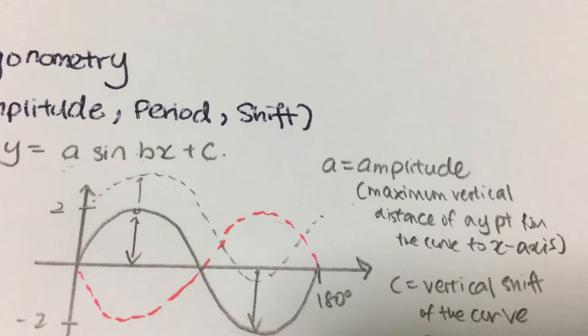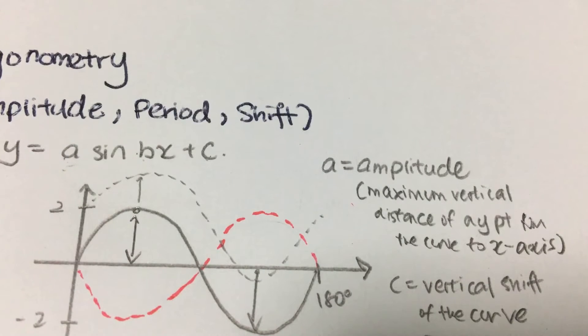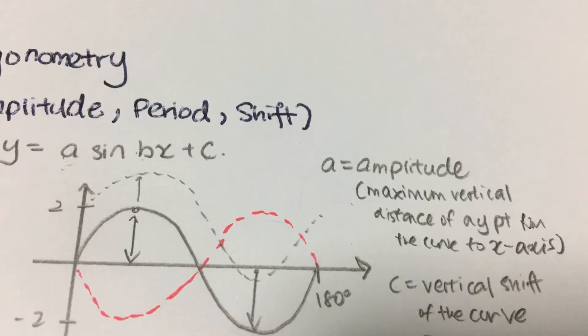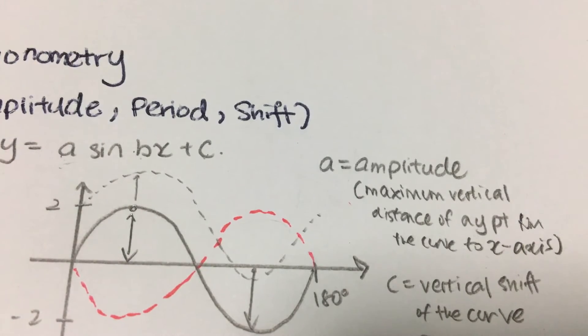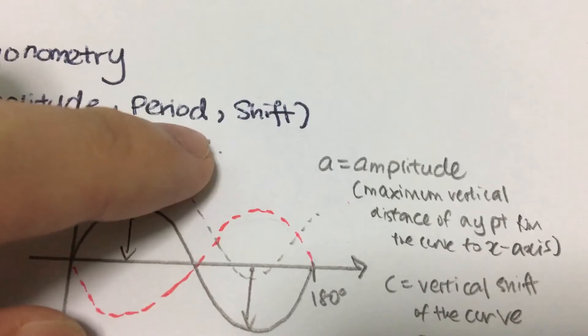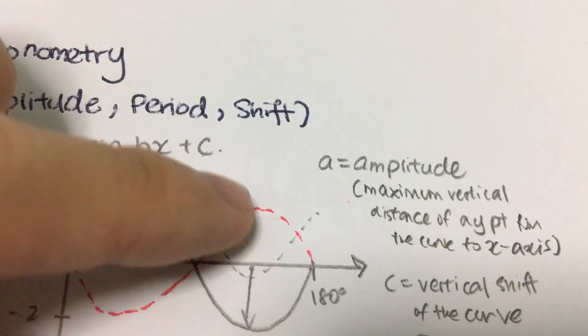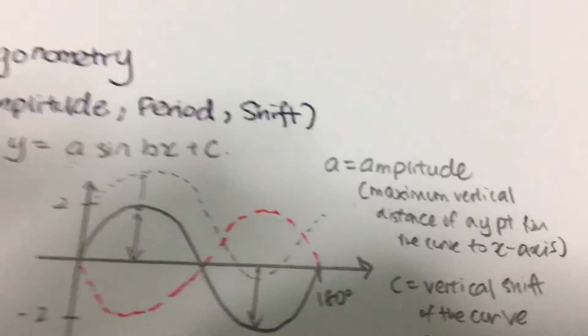The amplitude is a. To find b itself is basically 360 over period for sine and cosine, while 180 over period for tangent. While shift itself is basically the vertical shift upwards and downwards, which is represented by c.